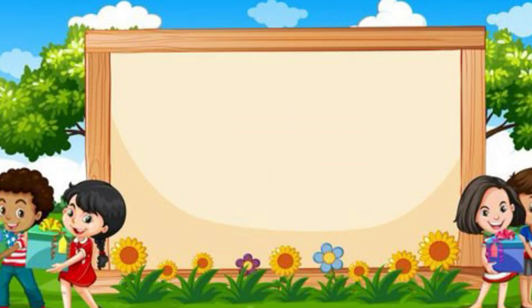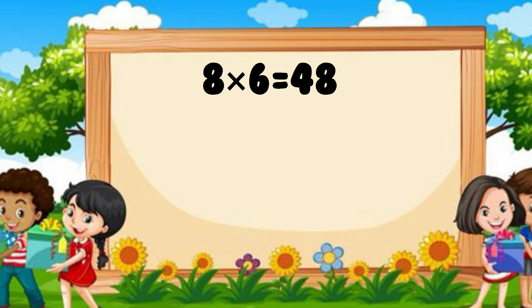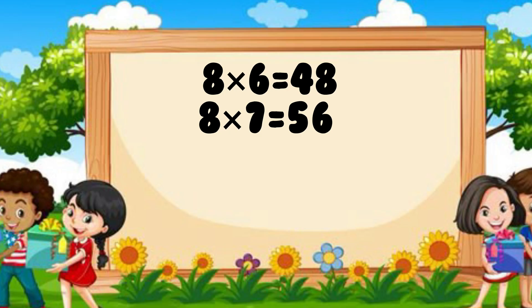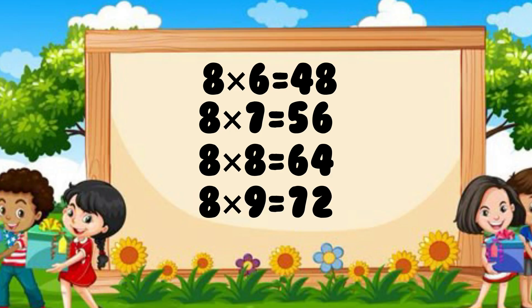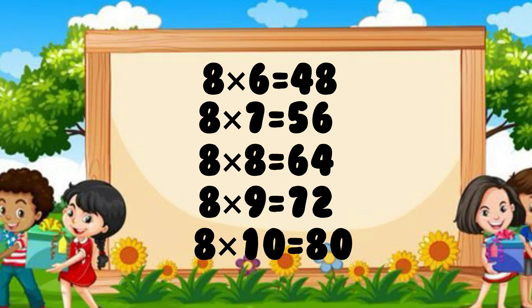8 sixes are 48. 8 sevens are 56. 8 eights are 64. 8 nines are 72. 8 tens are 80.